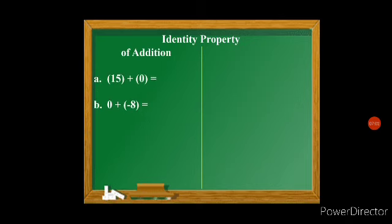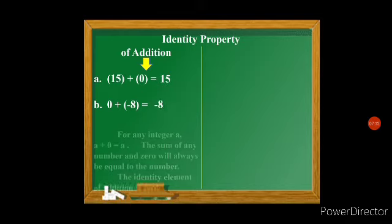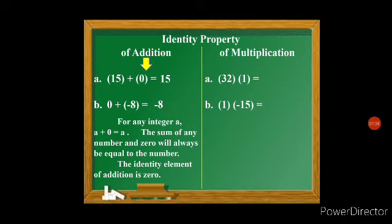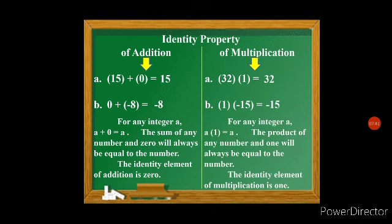The identity property: for addition, 15 plus 0 equals 15, and 0 plus negative 8 equals negative 8. For any integer a, a plus 0 equals a. The sum of any number and 0 is always equal to that number — the identity element of addition is 0. For multiplication, 32 times 1 equals 32, and 1 times negative 15 equals negative 15. For any integer a, a times 1 equals a — the identity element of multiplication is 1.